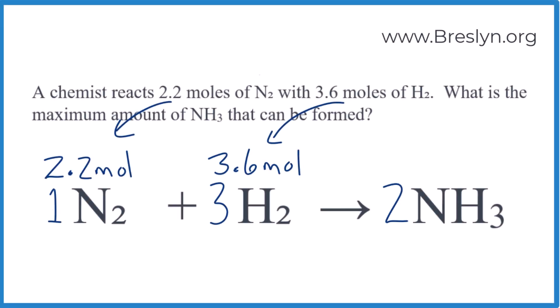So in this limiting reactant problem, we need to figure out the maximum amount of NH3 that can be produced. To do that, we have to figure out which one of these reactants is limiting, and then we'll use that number to figure out the amount produced.